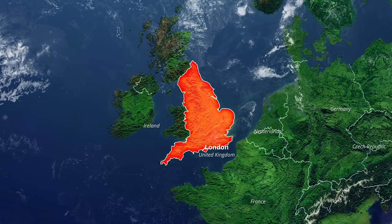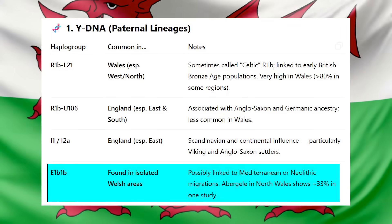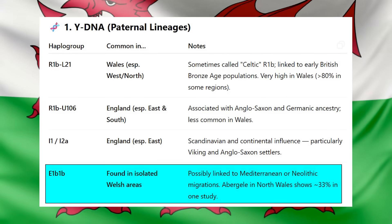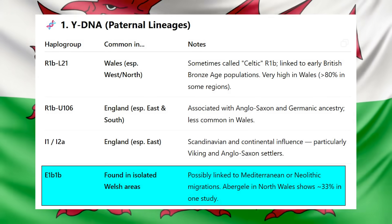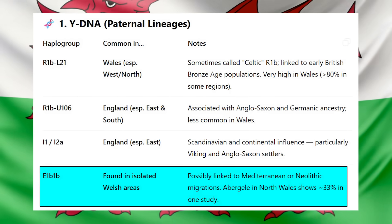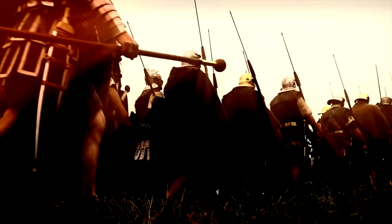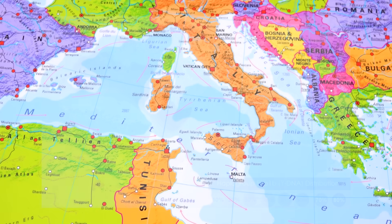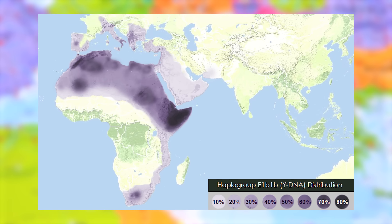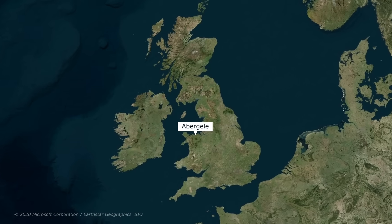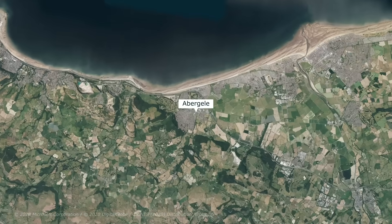There are also some interesting quirks. Haplogroup E1b1b, typically rare in Britain, appears at unusually high levels — reportedly up to 33% — in the North Welsh town of Abergele, according to data from local and surname-based genetic projects, though not peer-reviewed studies. This lineage is linked to Neolithic farmers, Roman soldiers or settlers, and later Mediterranean trade routes, and is most common in North Africa and Southern Europe today. Its presence in such high concentration may reflect a founder effect or localised paternal expansion, or it may simply be a corruption or error in the data and should be treated cautiously.